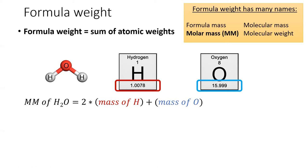To calculate the formula mass for water, we add the masses of two hydrogen atoms to the mass of one oxygen atom. Recall that these masses can be found on the periodic table.